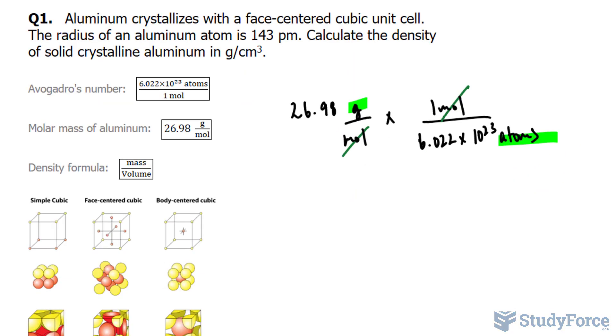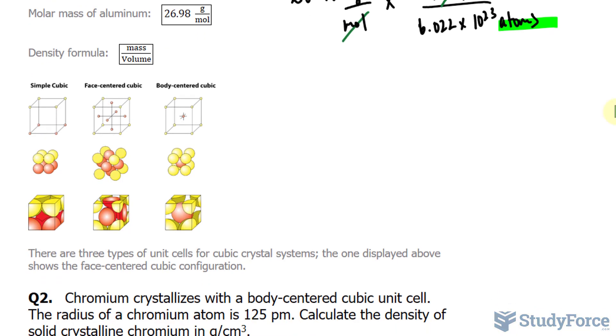But remember, we're told that it's face-centered cubic unit cell. So if we take a look at this illustration, in a face-centered cubic configuration right here, you have four atoms.